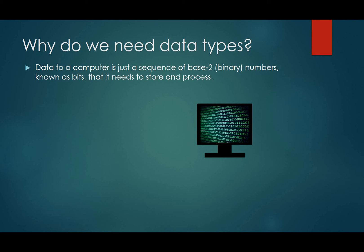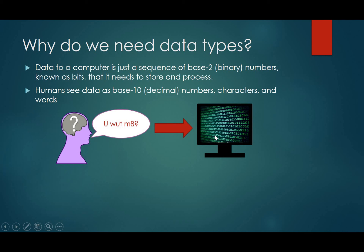Now, the problem is that humans see data as base 10, which is decimal numbers, characters, and words. So the computer sees it as binary, but we don't really read binary. At least most of us don't read binary. We like numbers that are base 10, decimal numbers. We like characters, like letters and words. That's what we see. So when we try to read binary, we kind of get a little bit confused.